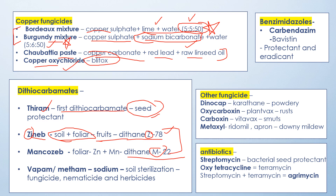Sometimes in exams they don't ask you simply 'mancozeb' — they put 'dithiocarbamate' and that can be confusing. Mancozeb is for foliar application; it is a combination of zinc plus manganese. That is the name origin of mancozeb.